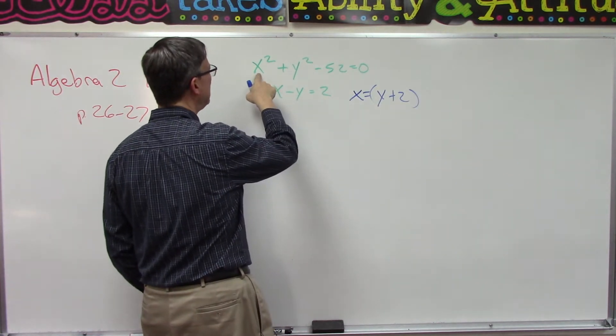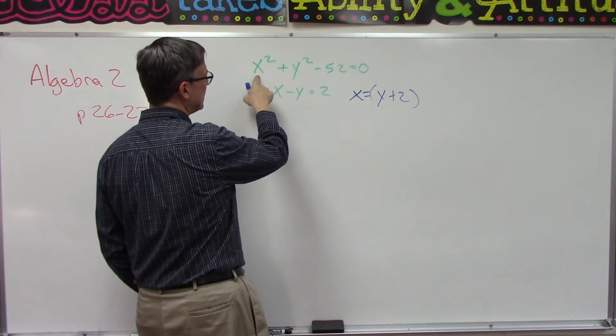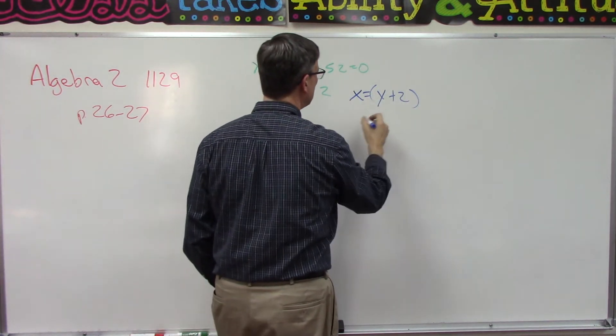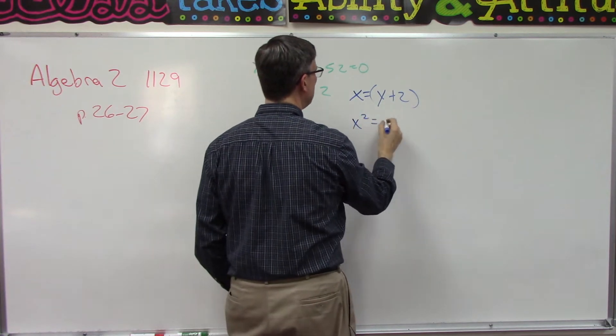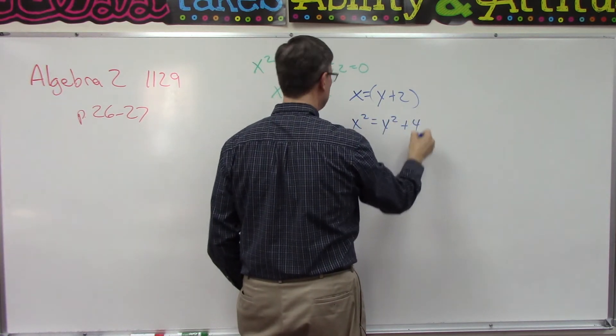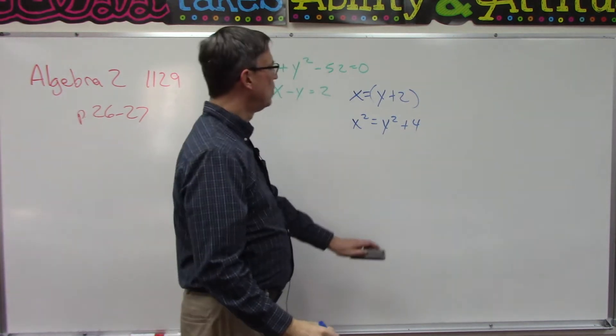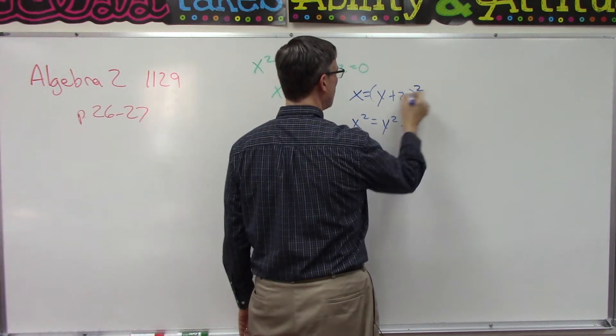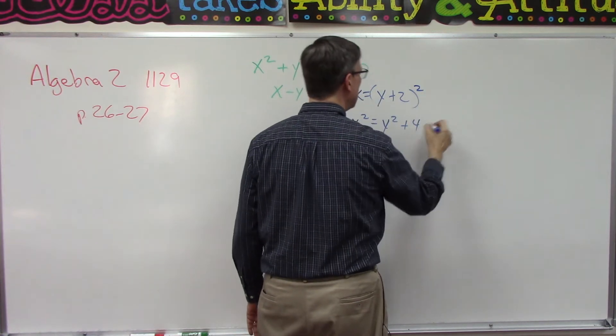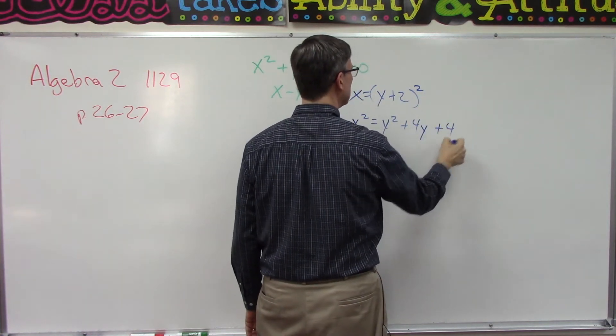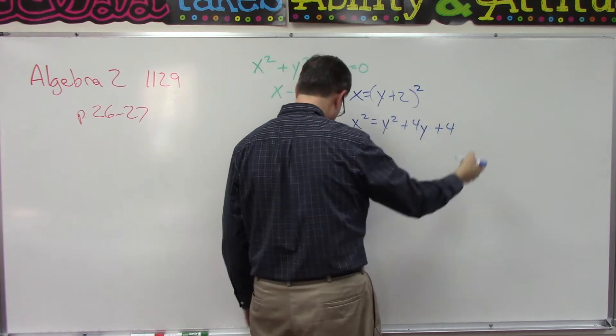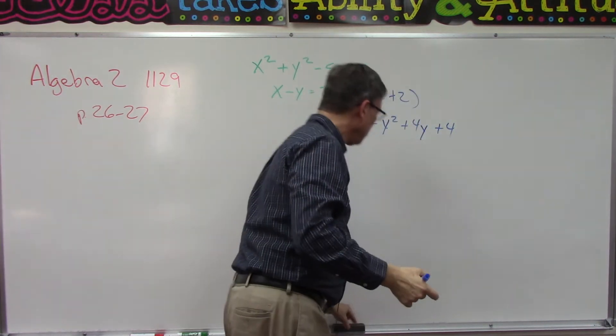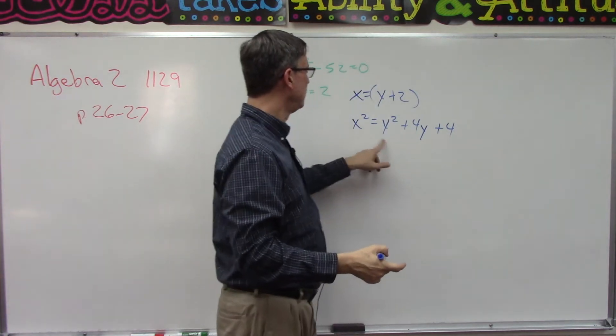Now I want to plug this in up here in place of the x and we're going to square it. So if x is y plus two, what would x squared be? And if you're thinking y squared plus four, you are wrong. We actually have to square the quantity, and so it'd be y squared plus four y plus four. We have to do the foil method.